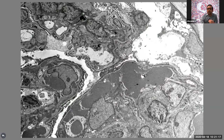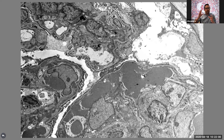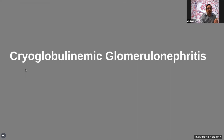On electron microscopy we see numerous large subendothelial electron-dense deposits. Although this type of biopsy typically has a microtubular substructure, in this image the substructure is not very clear — and that was intentional. Substructure in cryo is one of those things that when you see it, it's very helpful. But when you don't see it, it does not argue against the diagnosis — in fact, more often than not we do not see the substructure. Cases do not read textbooks. Not all cases of cryo are masked, but occasionally they are.